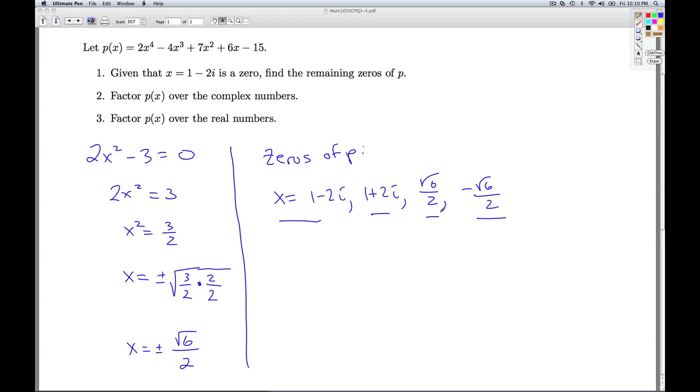Now it doesn't ask for this, but we'll need it for part 2. What are the multiplicities of each of these? Well, from what we did in class, if I look at the degree of the polynomial, in this case 4, that has to be the sum total of the number of zeros counting multiplicities. We have four distinct zeros, they're all different, so they all have multiplicity 1.